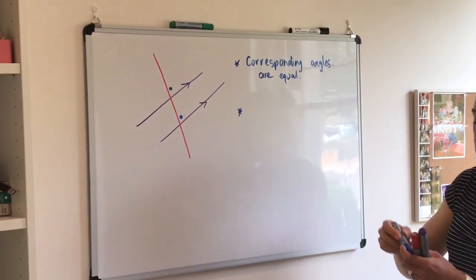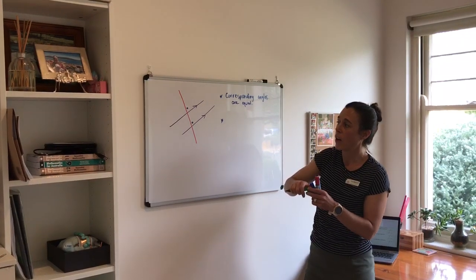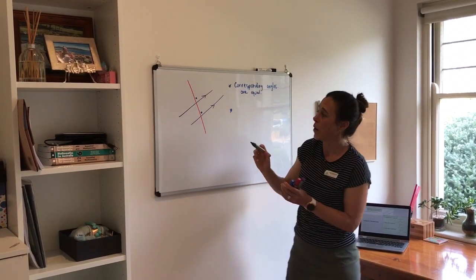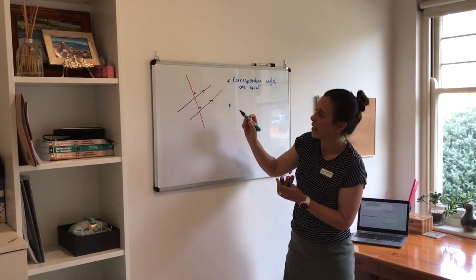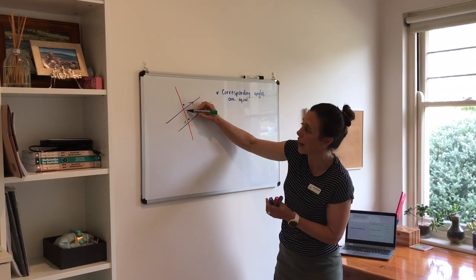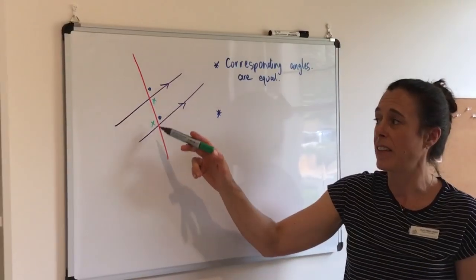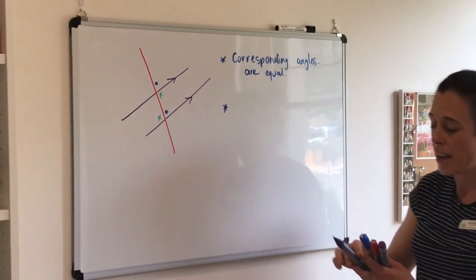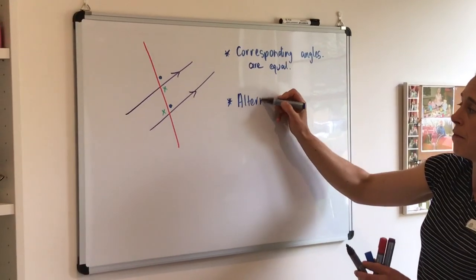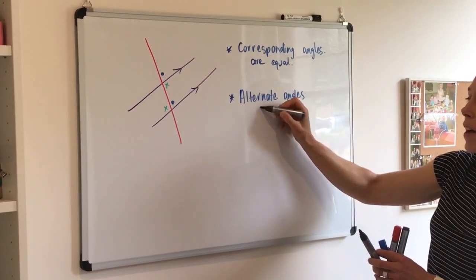The second rule is alternate angles. So alternate angles are when we have let's say one angle here and one angle here. So alternate meaning they are on either side of that transversal line. And once again, alternate angles are equal.